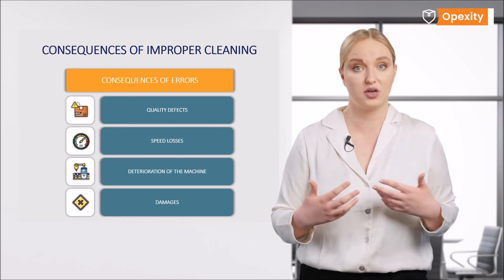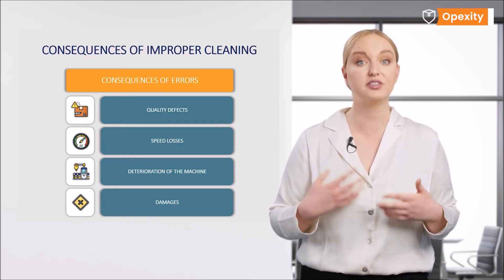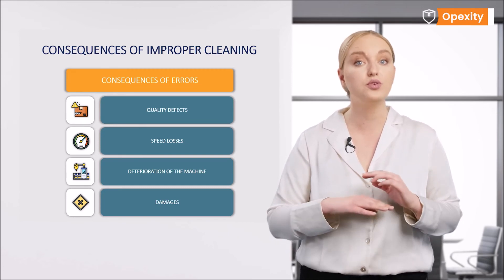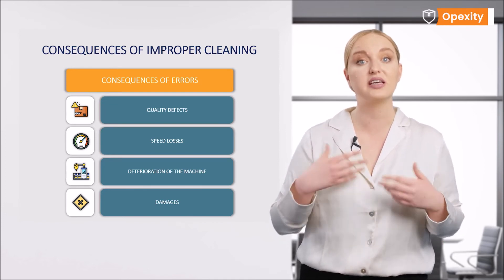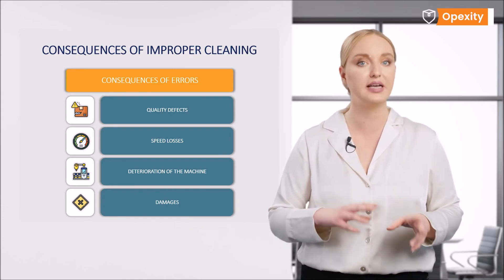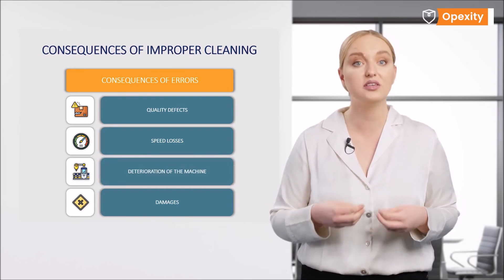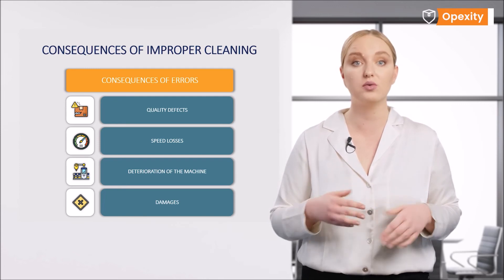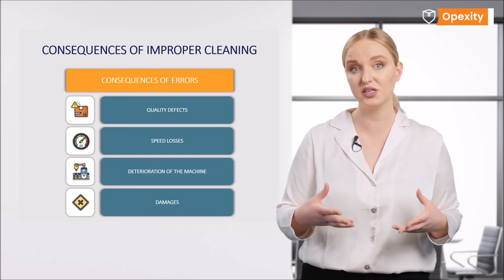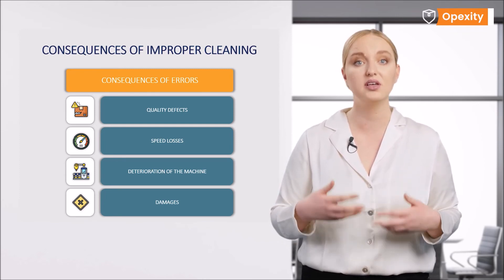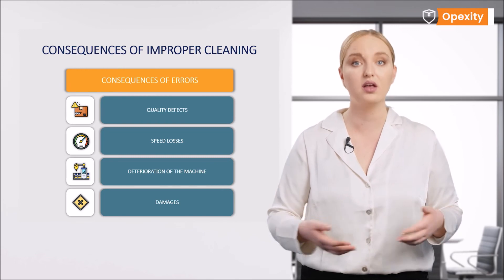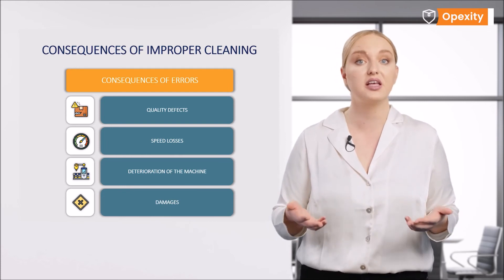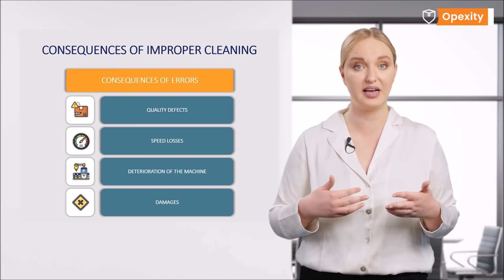Speed losses are called microstops — brief machine stops for the purpose of adjusting or slowing down the machine, usually resulting from machine malfunctions. In this situation, we do not run the machine at the full speed cycle assumed by the technologist, but slow down due to fear of damage. Machine deterioration is a consequence of not reacting sooner. The further away from the removal of the anomaly, the more likely it is that the machine will stop. Deterioration leads to greater wear and tear on components and therefore to higher repair costs, and may ultimately result in damage to the machine itself, involving limitations as well as health and safety hazards for the worker.